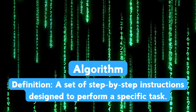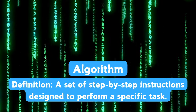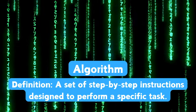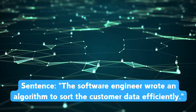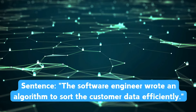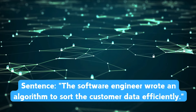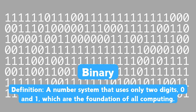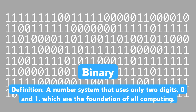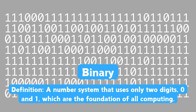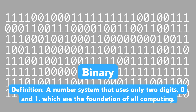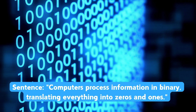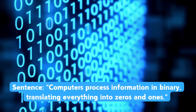Algorithm. An algorithm is a set of step-by-step instructions designed to perform a specific task. The software engineer wrote an algorithm to sort the customer data efficiently. Binary. A binary is a number system that only uses two digits, zero and one, which are the foundation of all computing. Computers process information in binary, translating everything into zeros and ones.